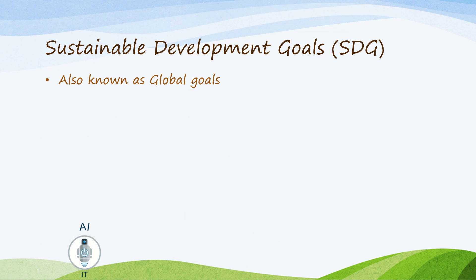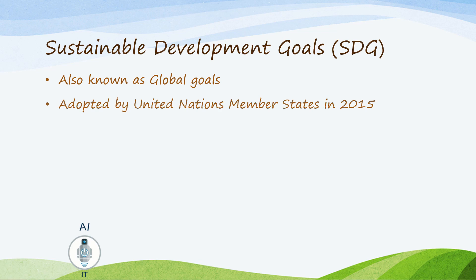The Sustainable Development Goals, otherwise known as the global goals, are a universal call to action to end poverty, protect the planet, and ensure that all people enjoy peace and prosperity. The SDGs were launched at the United Nations Sustainable Development Summit in New York in the year 2015, forming a 2030 Agenda for Sustainable Development.